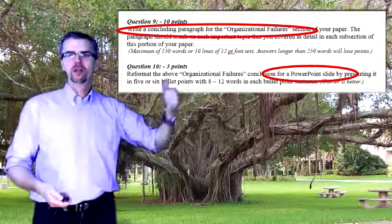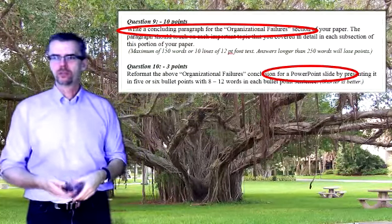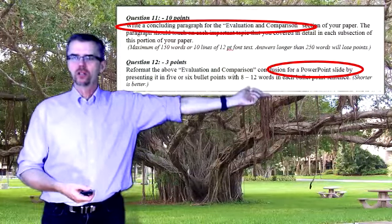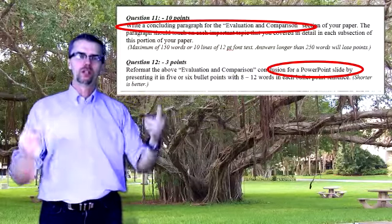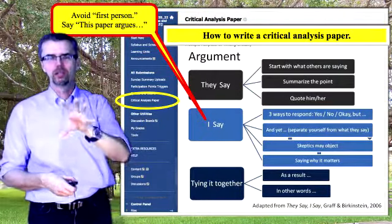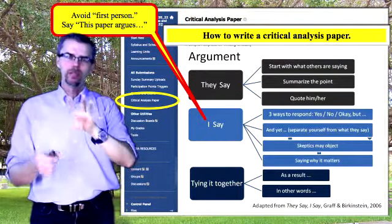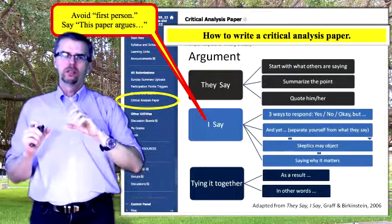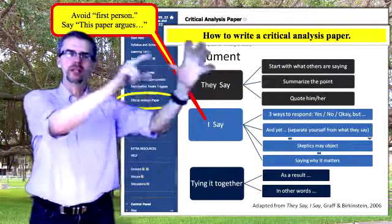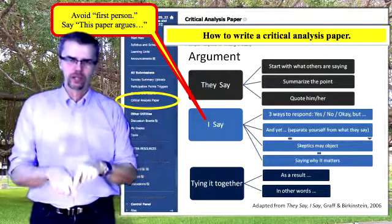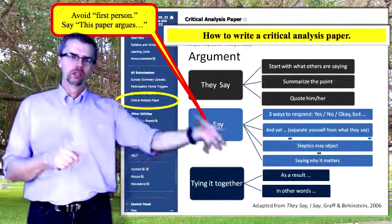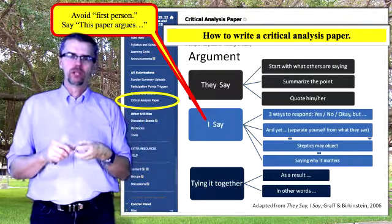Question number ten: once again, give me your PowerPoint slide with five to six bullet points. Question number eleven: the next section of your paper is the evaluation and comparison section — this is where you get into what I said. I don't want you to write in first person; that's never a good idea in a critical analysis paper. But think about it as they said, I said — or more precisely, they said and this paper says. Avoid the word 'I' by saying 'this paper will' or 'the theory presented in this paper says.'